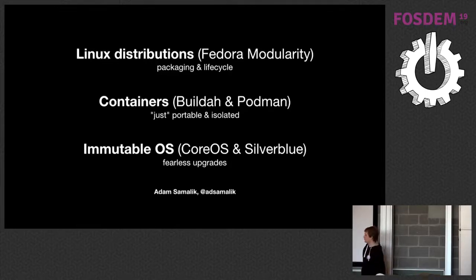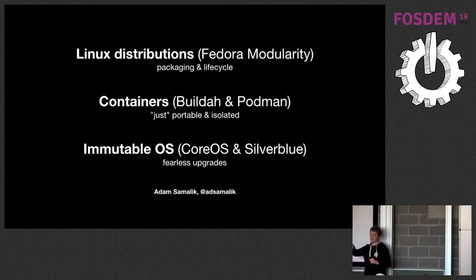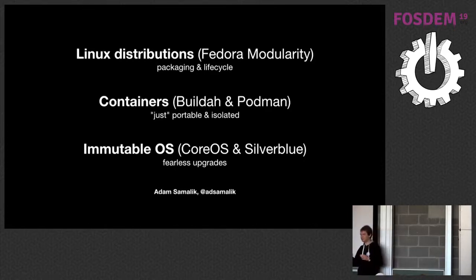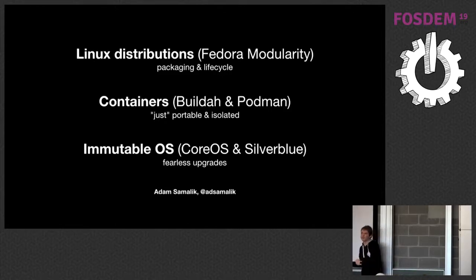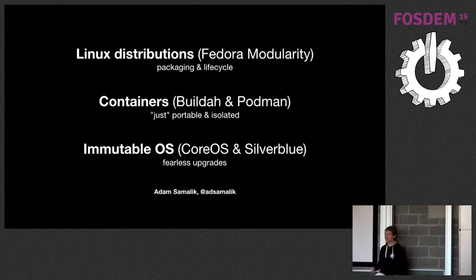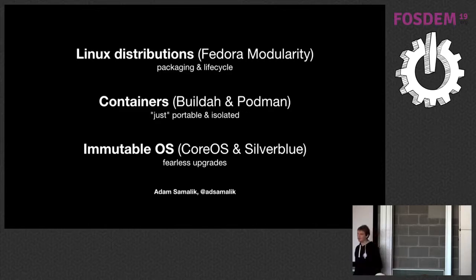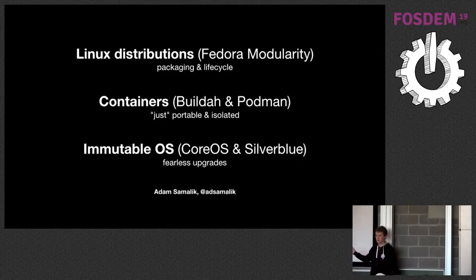Q&A: How does this work with Software Collections? Software Collections are RPM packages that install things into separate paths so multiple versions can coexist, but require path manipulation. In theory you could put them in a module, but we found that most people don't actually want multiple versions of the same thing in one user space. Modularity simplifies this using standard packages.